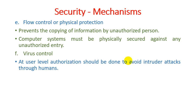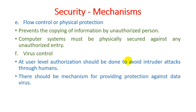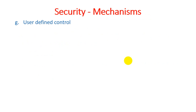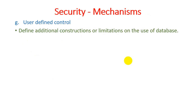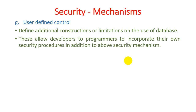There should be a mechanism providing protection against viruses as part of authorization in virus control. The last security mechanism is user-defined control, which defines additional constraints or limitations on users of data — including concepts of role as well as views. This allows developers and programmers to incorporate their own security procedures in addition to the above security mechanisms, defining how a particular user can access data with particular rules.